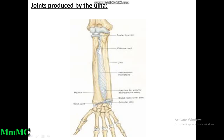The elbow joint is the hinge variety of synovial joint causing flexion and extension. The superior radio-ulnar joint is the pivot variety of synovial joint. The middle radio-ulnar joint is a syndesmosis variety of fibrous joint. The inferior radio-ulnar joint is also the pivot variety. The superior and inferior radio-ulnar joints produce supination and pronation movements. The wrist joint is the ellipsoid variety of synovial joint, causing flexion, extension, adduction, and abduction; it is a biaxial joint, while the elbow joint is uniaxial.